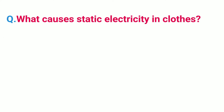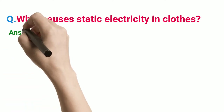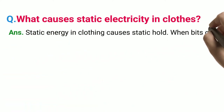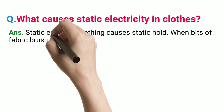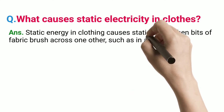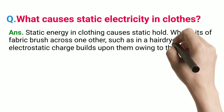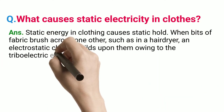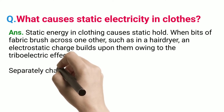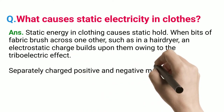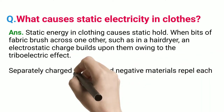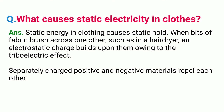What causes static electricity in clothes? Static energy in clothing causes static cling. When bits of fabric brush across one other, such as in a dryer, an electrostatic charge builds upon them owing to the triboelectric effect. Separately charged positive and negative materials repel each other.